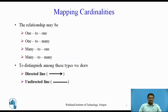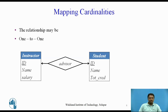Mapping cardinalities: the relationship set advisor between the instructor and student entity sets may be one-to-one, one-to-many, many-to-one, or many-to-many. To distinguish among these types, we draw either a directed line or an undirected line between the relationship set and the entity set. In one-to-one mapping, we draw a directed line from the relationship set advisor to both entity sets, instructor and student. This indicates that an instructor may advise at most one student and a student may have at most one advisor.